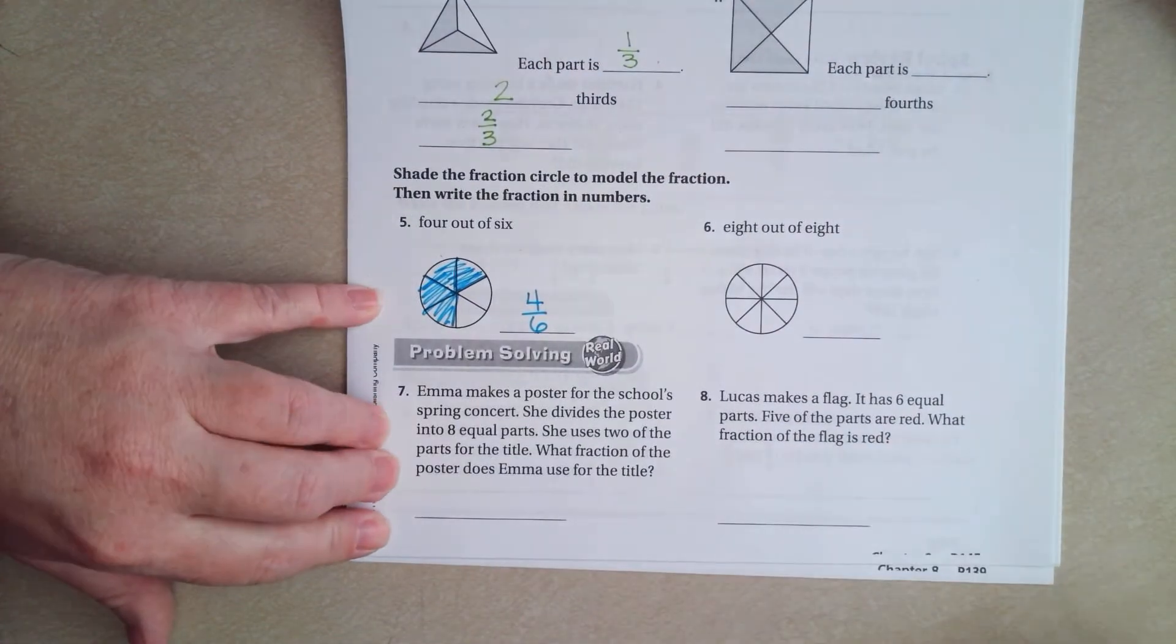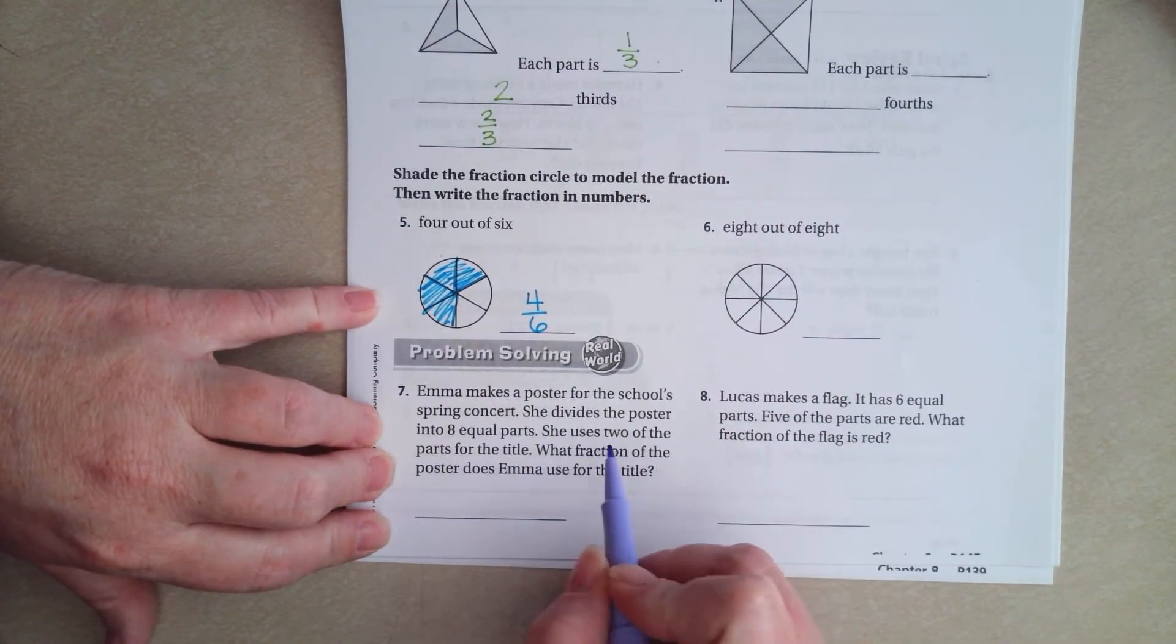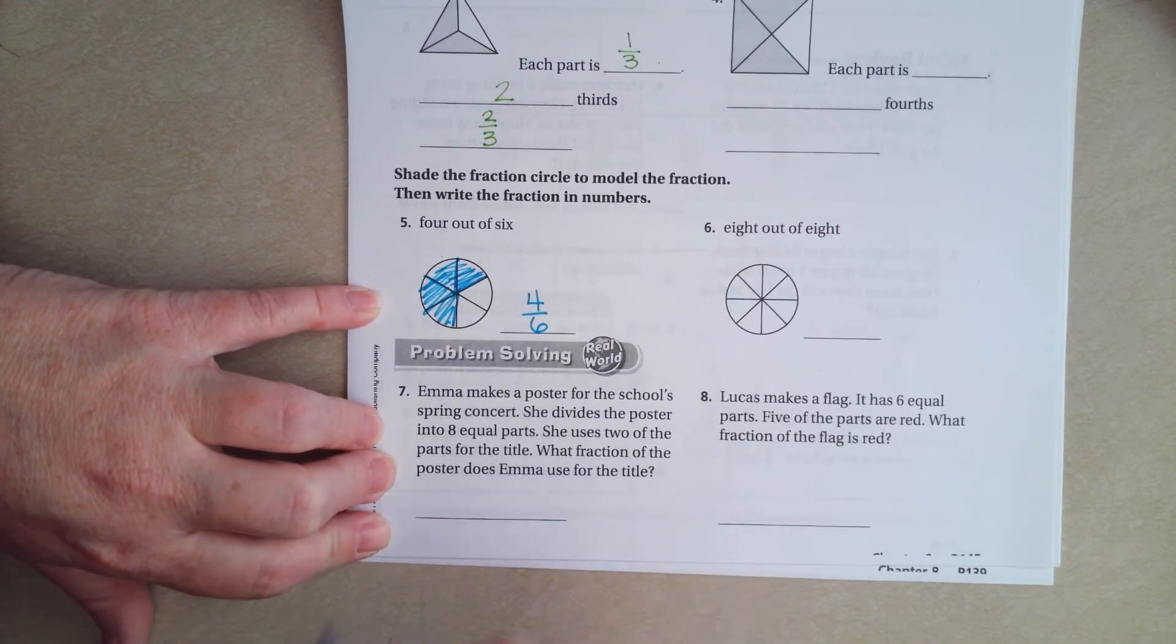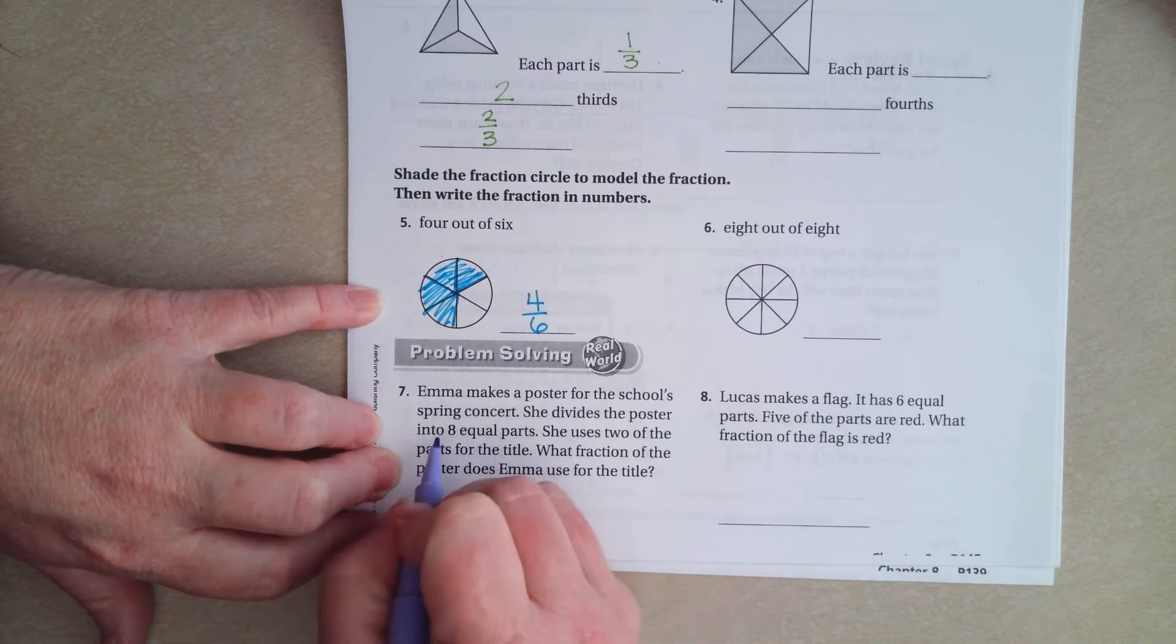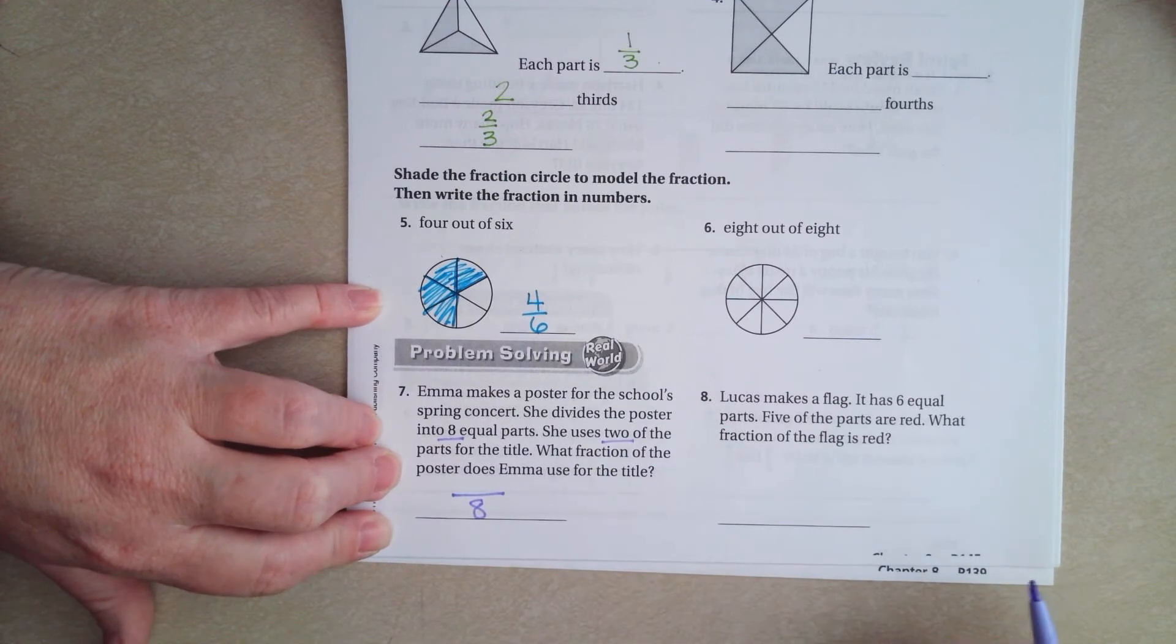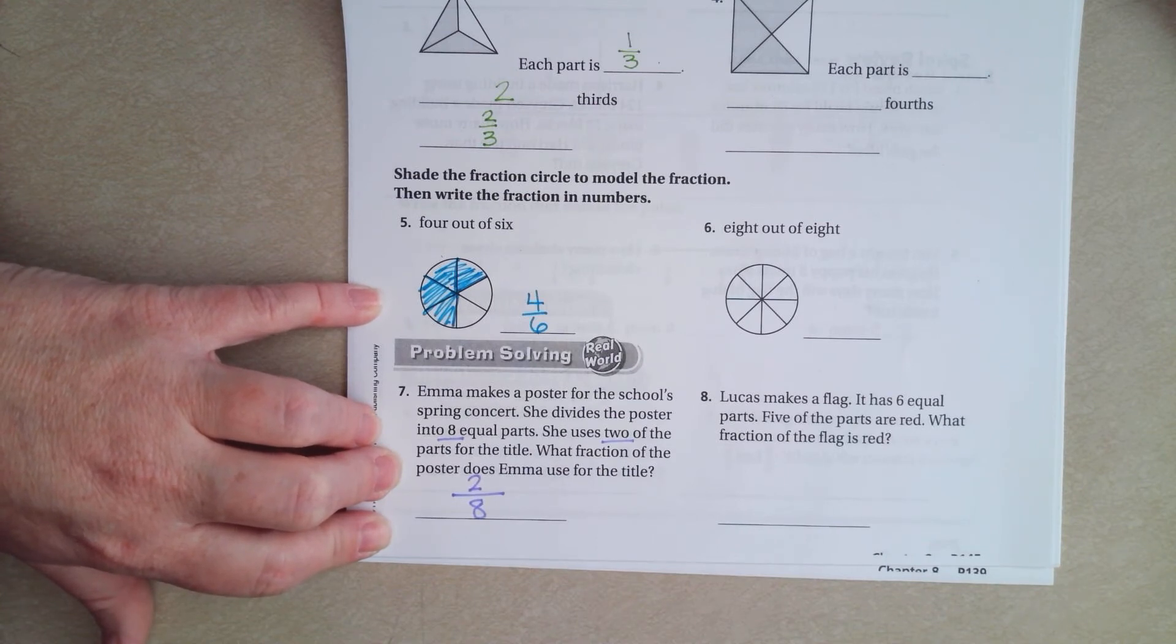Number 7 says, Emma makes a poster for the school's spring concert. She divides the poster into 8 equal parts. She uses 2 of the parts for the title. So the bottom number is how many parts we have in all. That's 8. 8 equal parts. She used 2 of the parts for the title. What fraction did she use for the title? Well, she used 2. It's that easy, guys. Don't make it harder than it's got to be.